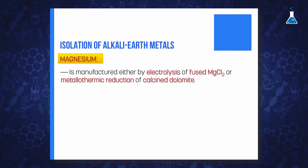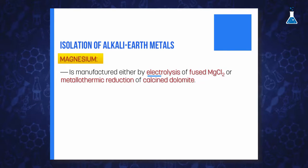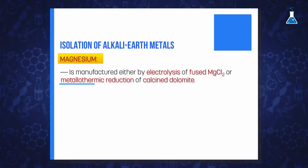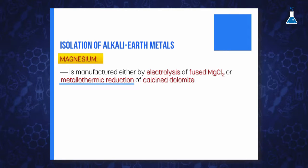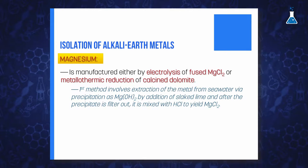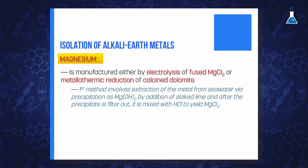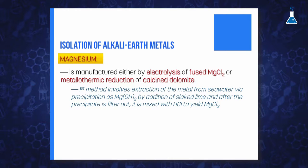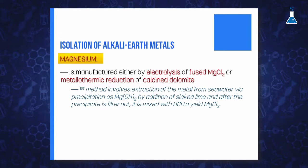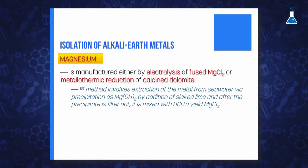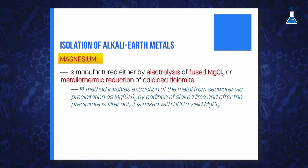Magnesium is manufactured on a large scale either by electrolysis of fused magnesium dichloride or metallothermic reduction of calcined dolomite. The first method is applied to the extraction of the metal from sea water via precipitation of magnesium dihydroxide with slaked lime and subsequent neutralization with hydrogen chloride.